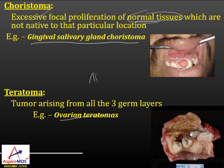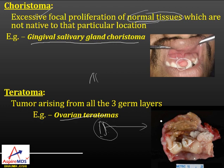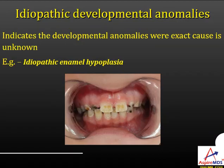Another kind of tumor is teratoma, where the tumor arises from all three germ layers. For example, in ovarian teratoma you can see the presence of teeth as well, since all three layers — ectoderm, mesoderm, and endoderm — are involved. Then there is idiopathic developmental anomaly, where the exact cause is not known. Example is idiopathic enamel hypoplasia.